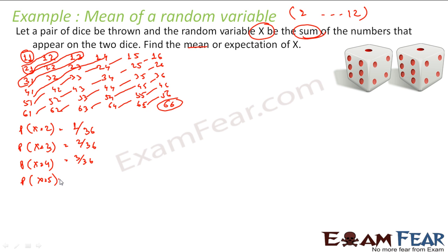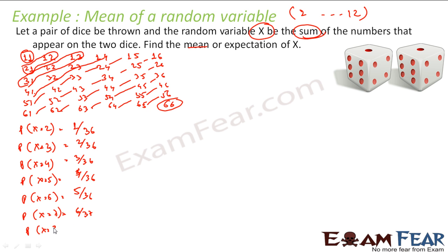Probability of x=5: there are 4 combinations, so 4/36. Probability of sum=6: there are 5 combinations, so 5/36. Probability of x=7: there are 6 combinations for which the sum is 7, so 6/36. For x=8: there are 5 combinations, so 5/36.